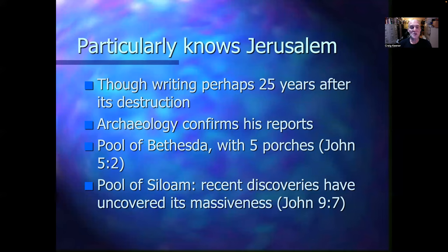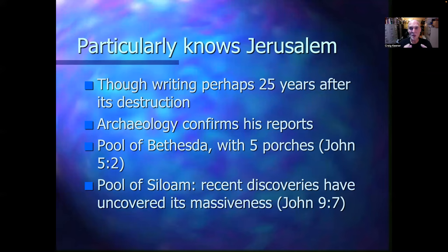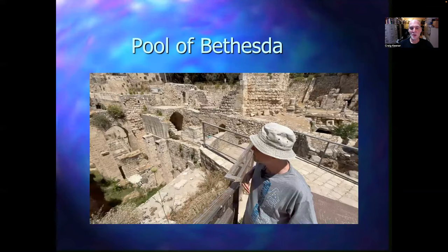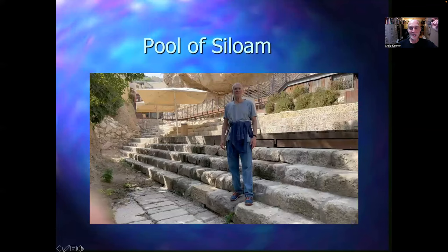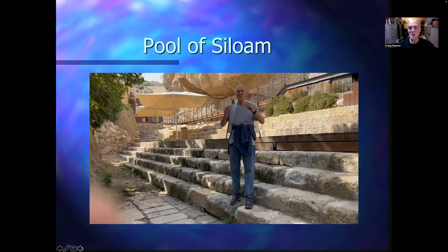You've got the Pool of Bethesda with its five porches. People didn't understand why it had five porches — was it shaped funny, with five sides? But archaeologists have found it under St. Anne's Monastery, where tradition located it. Indeed, the pool had four sides, and then one portico running down the middle. The Pool of Siloam — recent discoveries have uncovered just how massive it really was. The Pool of Bethesda is shown here. Some of the excavations I would show on video, but that would take us too much time. Same with the Pool of Siloam.